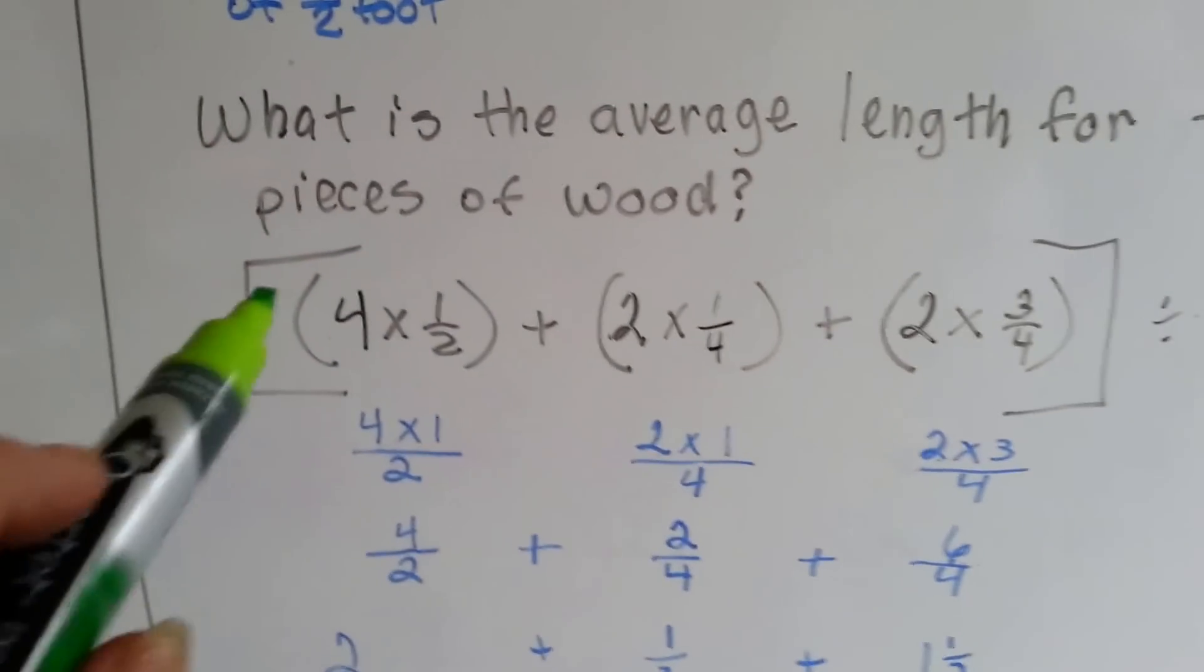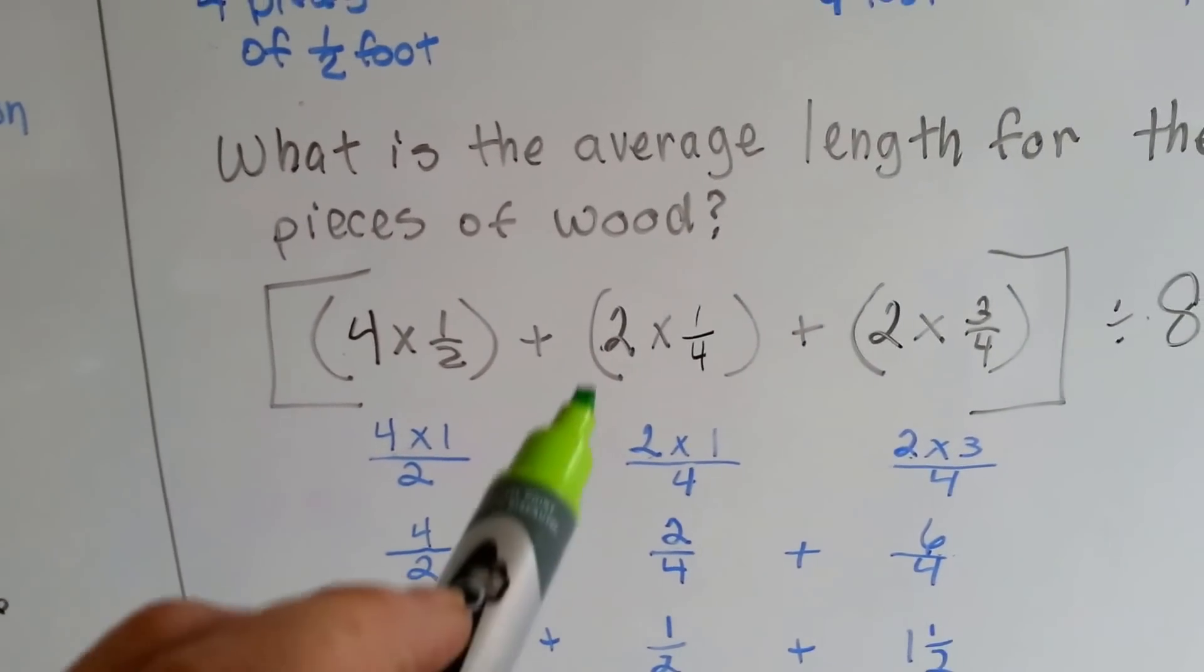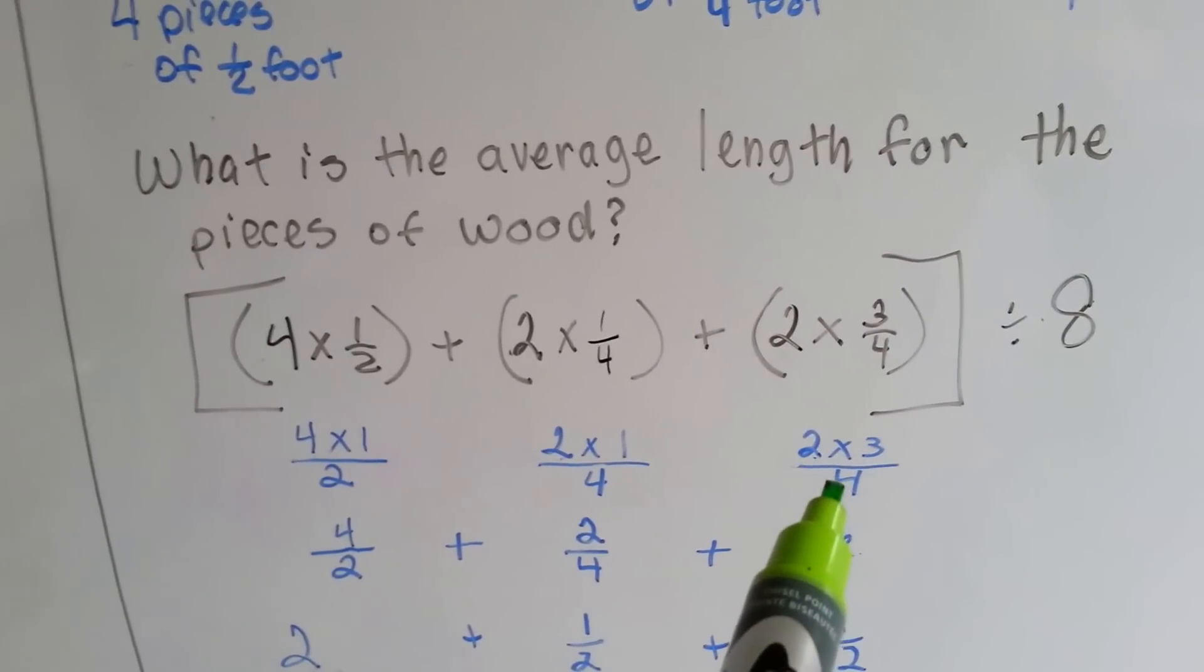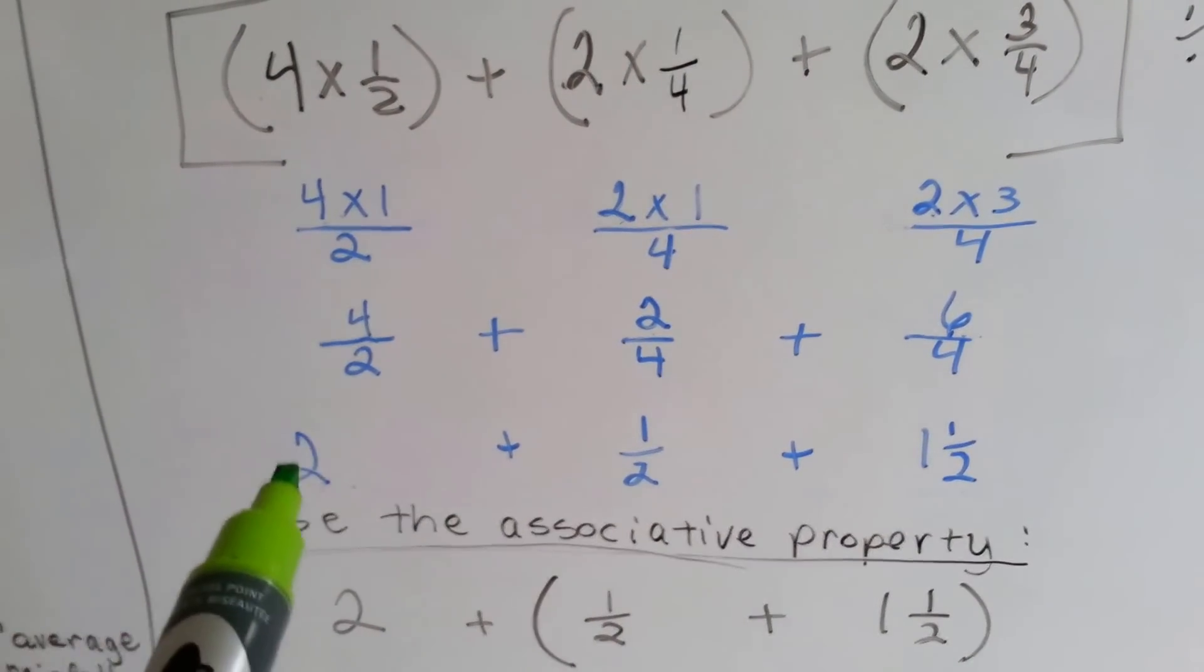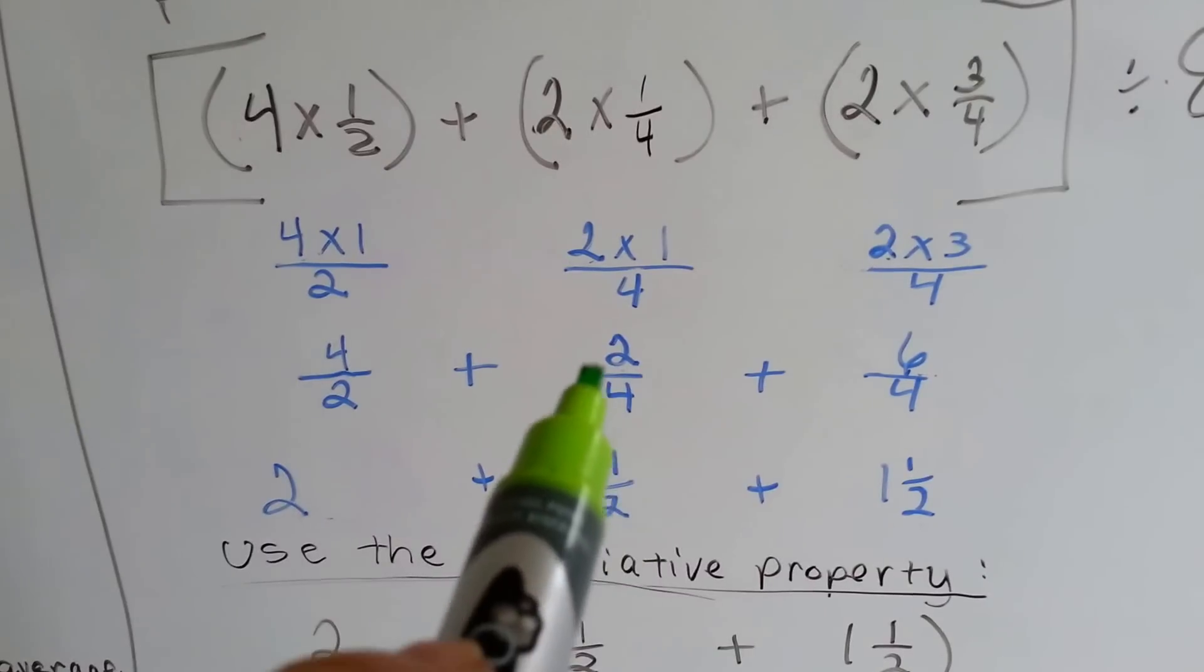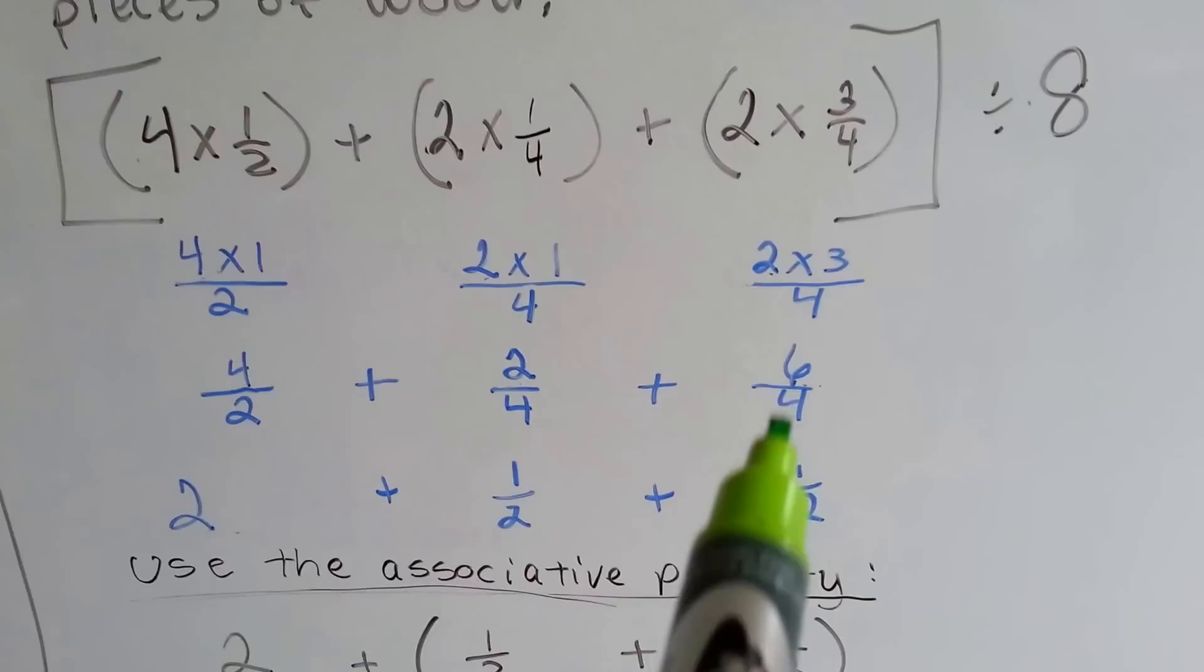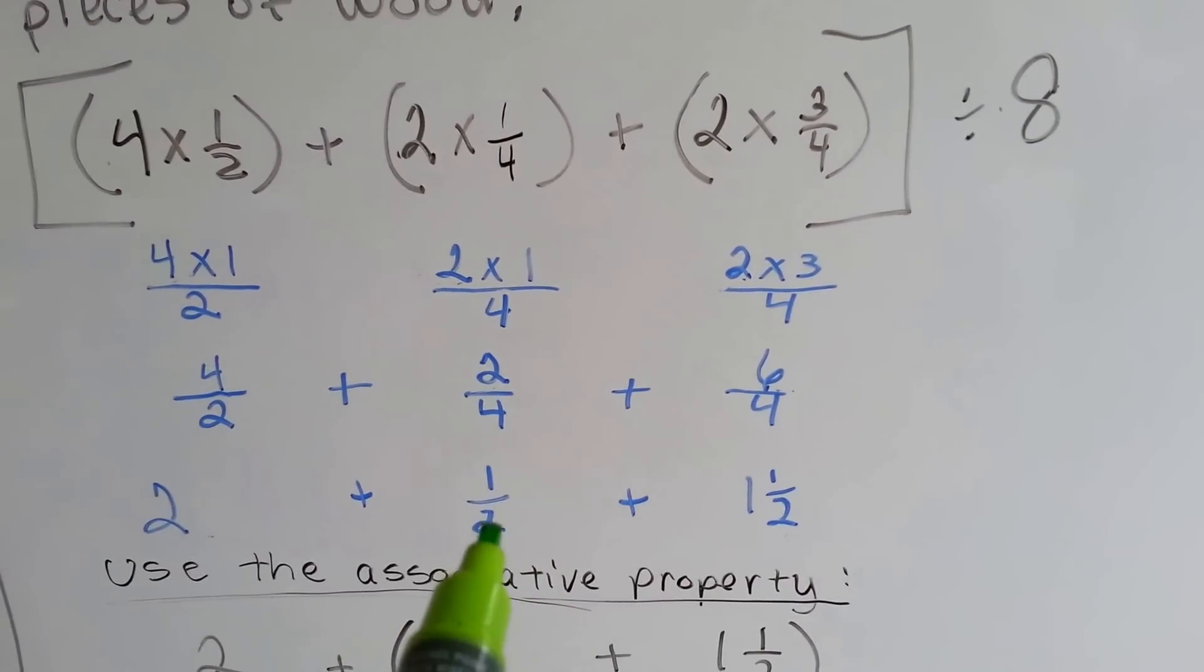See? So, four times a half is the same thing as four times one over two, so that gives us four over two. Two times one-fourth is the same thing as two times one over four, which gives us two-fourths. And two times three-fourths is the same thing as two times three over four, which gives us six-fourths. Now we need to simplify these. Four over two is the same thing as two, because two can go into four two times. Two-fourths, the numerator and denominator can be divided by two. Two divided by two is one. Four divided by two is two, and we get a half. Six-fourths, there's one four-fourths hiding in here, which leaves one and two-fourths. We know two-fourths is a half, so it's one and a half.